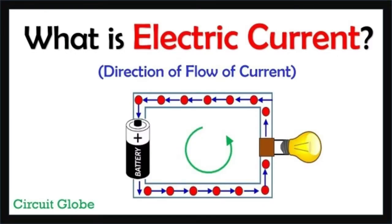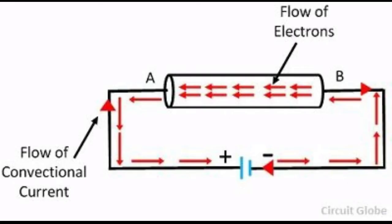Electric current. The motion of electric charges, that is electrons, through a conductor, for example copper wire, will constitute an electric current. This is similar to the flow of water through a channel, or flow of air from a region of high pressure to a region of low pressure. In a similar manner, the electric current passes from the positive terminal, that is higher electric potential, of a battery, to the negative terminal, that is the lower electric potential, through a wire.